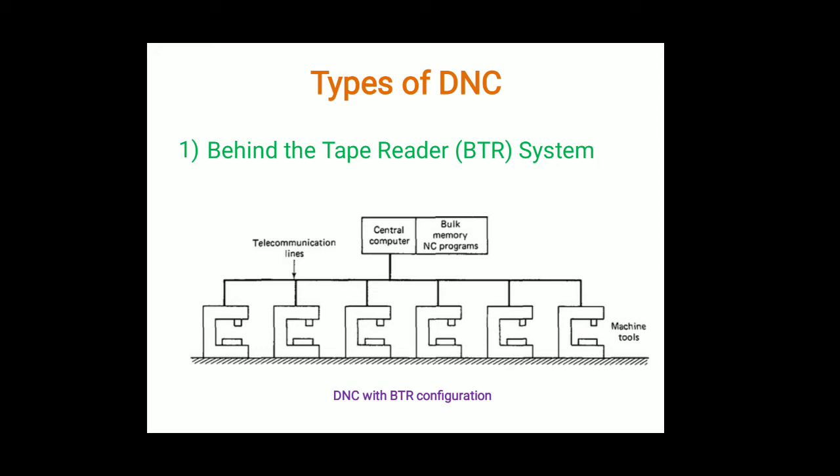The first type is the Behind the Tape Reader (BTR) system. Behind the tape reader means we are eliminating the tape reader from the system and giving the input in terms of the program from computers or teleconvection lines. Here the center computer unit has bulk memory for NC programs, and the different machines are connected via teleconvection lines to the center computer and bulk storage. In this system, the computer is linked to the regular NC control unit, and the replacement of the tape reader by teleconvection lines gives it the BTR name.